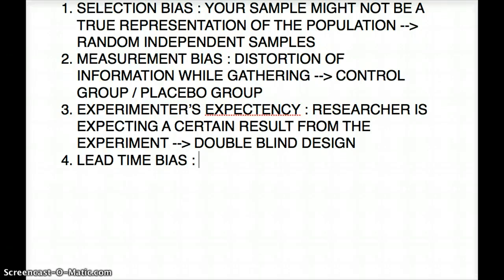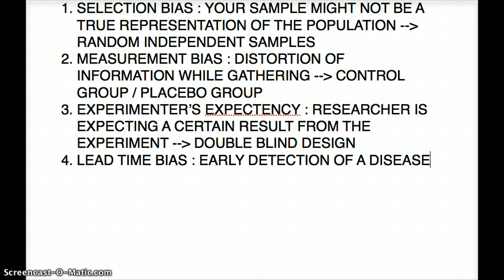This is followed by lead time bias. Lead time bias deals with early detection of a disease. If you detect a disease early, you can probably treat it early and will probably have better survival for that patient. But just because you detected a disease early doesn't mean the person is living longer — it just means you caught the disease early. That's lead time bias.